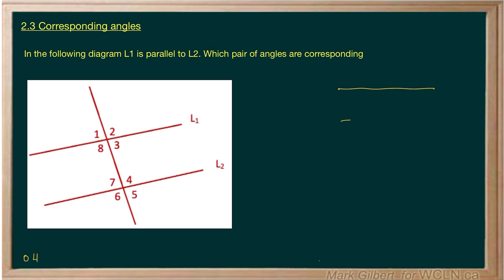Corresponding angles occur when we have two parallel lines and a transversal. They're on the same side as the transversal, one on the inside and one on the outside.